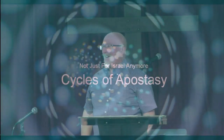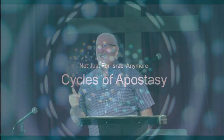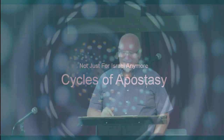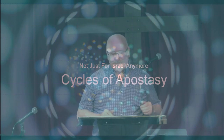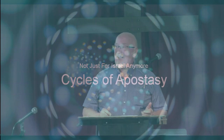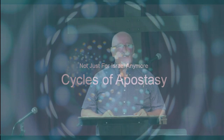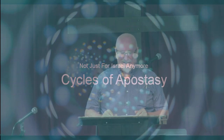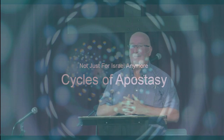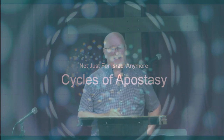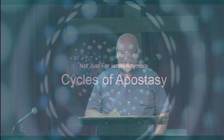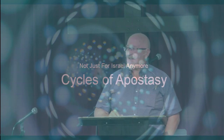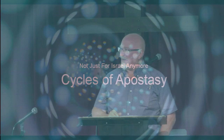Last Sunday, Barry had another crazy questions day, and in it he mentioned Israel's cycles of apostasy, and he used the example of one of Israel's judges, Jephthah, and Jephthah lived about 3,000 years ago.